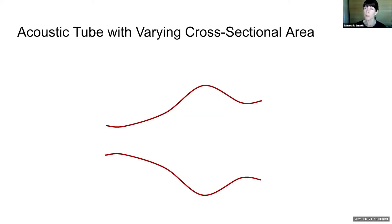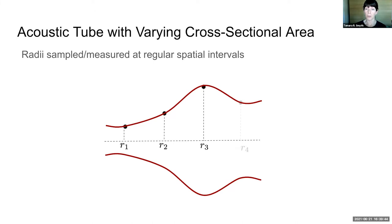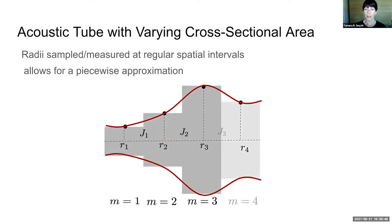If the acoustic tube has varying cross-sectional area along its length, the wave-guide section no longer applies. We can use radii sampled at regular spatial intervals to fit sections along its length, and those sections can either be cylindrical or conical.